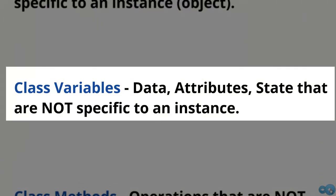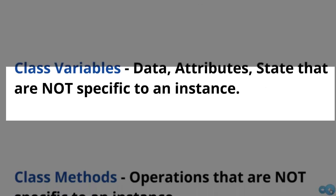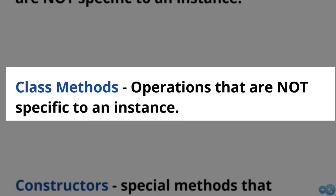Class variables are data or attributes not specific to any particular instance. A common class variable tracks how many objects of a certain type we have — how many superheroes, bank accounts, or televisions. Class methods apply the same concept to operations. For example, in a bank account class there may be an operation to change the interest rate for a six-month CD — it would apply to everyone at that bank, so it would occur through a class method.